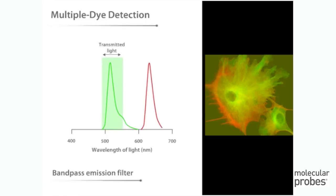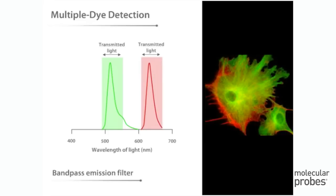Careful filter selection helps to ensure that the detector registers only the light you are interested in, the fluorescence emitted from the sample.